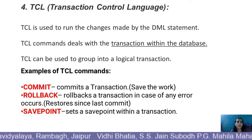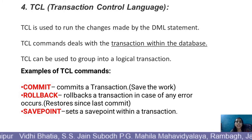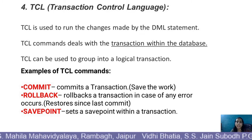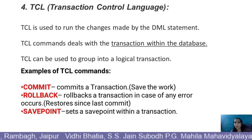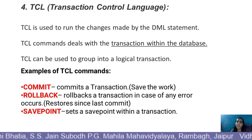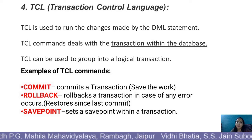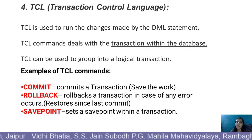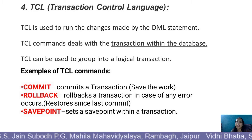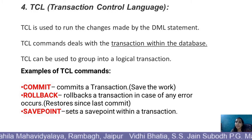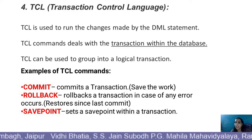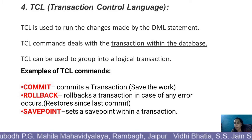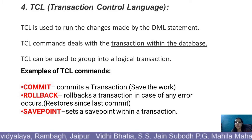TCL stands for Transaction Control Language. It is used to run the changes made by the DML statement. TCL commands deal with the transaction within the database. A transaction is a logical unit of work. TCL can be used to group statements into a logical transaction. Examples of TCL commands are commit, rollback, and save point. Commit commits a transaction. Rollback rolls back a transaction in case any error occurs, i.e. it restores the state since the last commit. Save point sets a save point within a transaction.